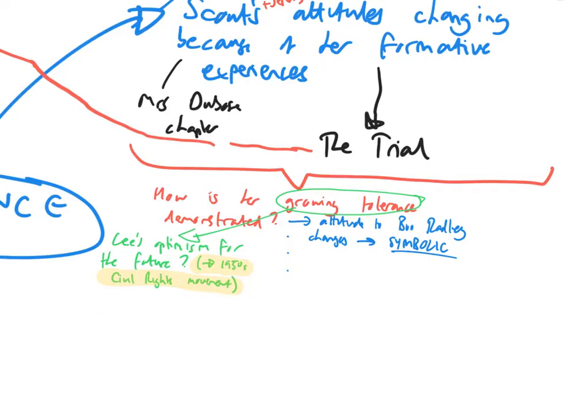So, Scout's growing tolerance links to Harper Lee's optimism for the future. Because Mockingbird, of course, was written in the 1950s, the height of the civil rights movement, with cases such as Brown versus the Board of Education in the Supreme Court that challenged segregation, and civil rights leaders such as Martin Luther King and Rosa Parks.